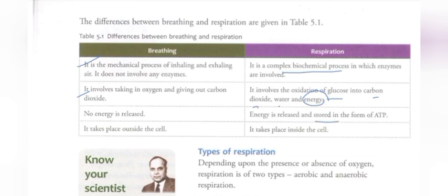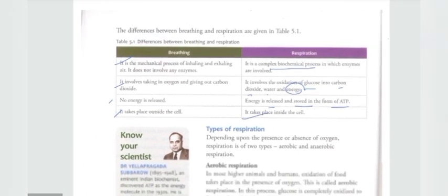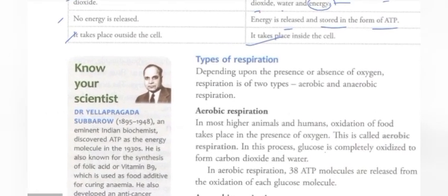This energy is either stored in the cell or released in the form of ATP, which is immediately used by the cell. In breathing we are talking only about the exchange with the external environment — no energy is released there, and breathing takes place outside the cells. Internal respiration happens inside the cells. These are the differences between breathing and respiration.